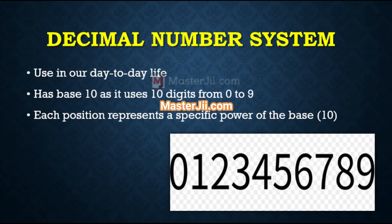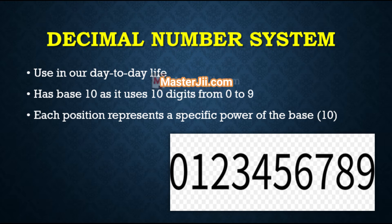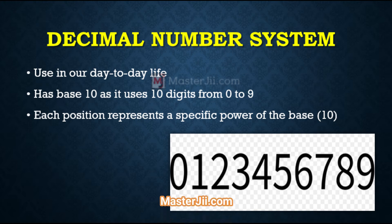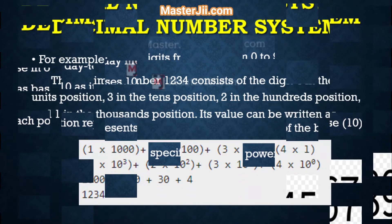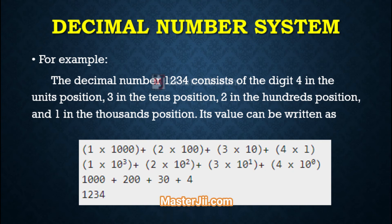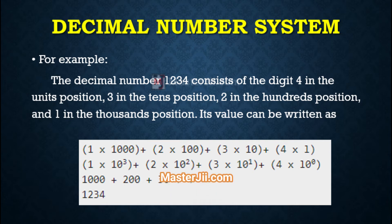First we will discuss the decimal number system in detail. The number system that we use in our day-to-day life is the decimal number system. It has a base of 10, as it uses 10 digits from 0 to 9. In the decimal number system, the successive positions to the left of the decimal point represent units, tens, hundreds, thousands, and so on. Each position represents a specific power of the base 10. For example, the decimal number 1234 consists of the digit 4 in the units position, 3 in the tens position, 2 in the hundreds position, and 1 in the thousands position.